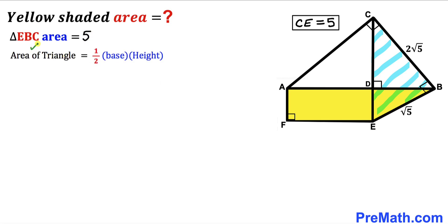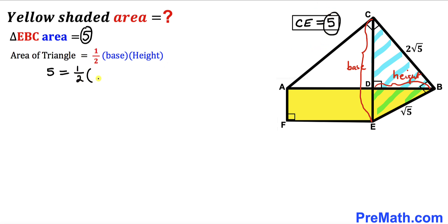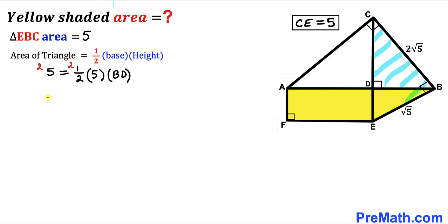Now let's use the area formula again — area equals one half times base times height — with CE as the base and BD as the height. We know the area is 5, so: 5 equals one half times 5 times BD. Multiplying both sides by 2: 10 equals 5 times BD. Dividing both sides by 5, BD equals 2 units.